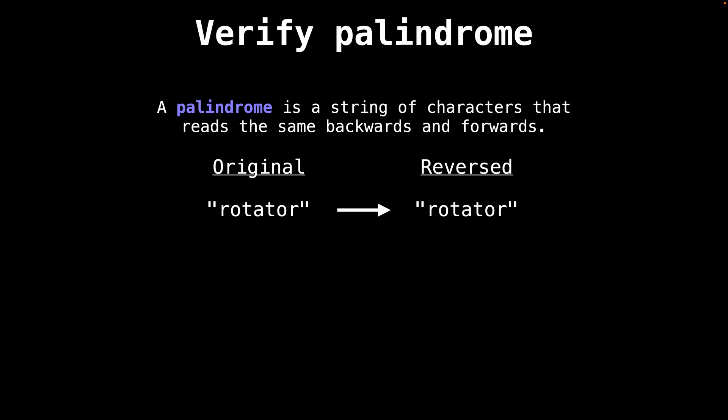Alright, we just finished looking at how to reverse a string recursively. Now let's shift our attention to something slightly different, but related, which is the problem of identifying whether a string is a palindrome or not. Palindromic strings are strings which read the same backwards and forwards, meaning you can reverse the string and you get the original string you started with.